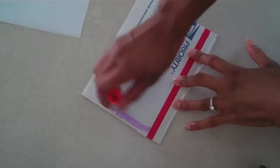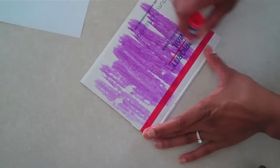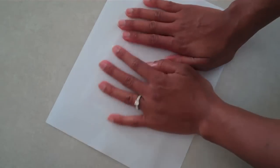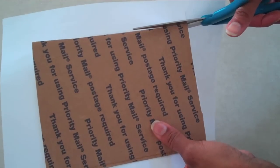With a glue stick, I am going to glue the white piece of paper onto my large rectangular shape of cardboard. Then I'm going to cut it out.